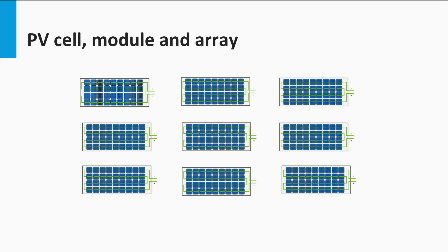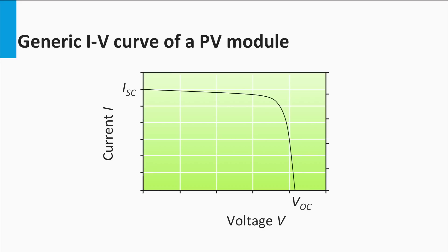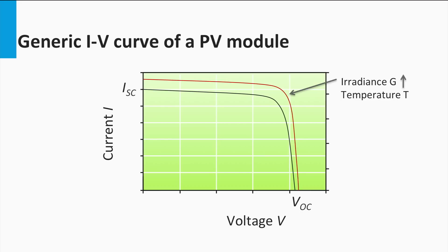Let's look at the simple IV curve of a solar module. The IV curve is nothing but the current-voltage curve. This IV curve of a PV module is defined for a unique set of temperature and irradiance conditions. For instance, if the irradiance or illumination were to increase, the IV curve would also change to a higher level. In general, a higher irradiance gives a better IV curve, but a higher temperature gives a worse IV curve, and vice versa.